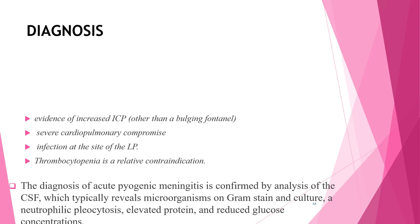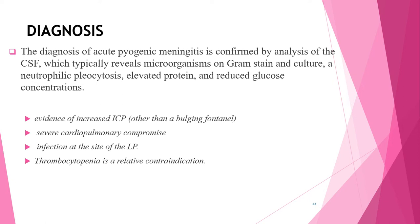For diagnosis, lumbar puncture to obtain CSF for Gram stain and culture is the most important step. Testing CSF for neutrophilic pleocytosis, elevated protein, and reduced glucose concentration can provide results within a few hours. Contraindications to immediate lumbar puncture include evidence of increased ICP other than a bulging fontanelle — such as third or sixth cranial nerve palsy with depressed level of consciousness — or the Cushing reflex (hypertension and bradycardia with respiratory abnormality).